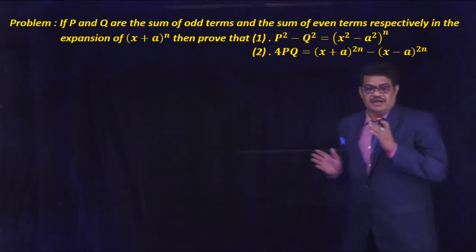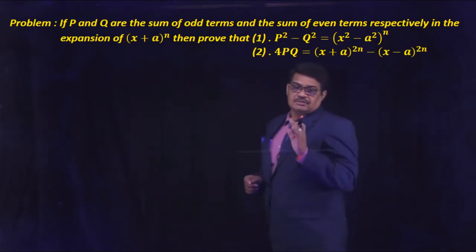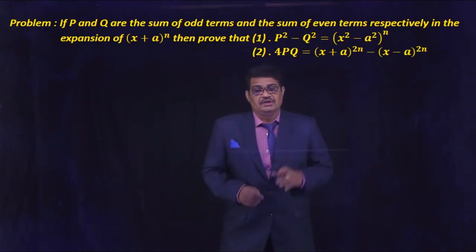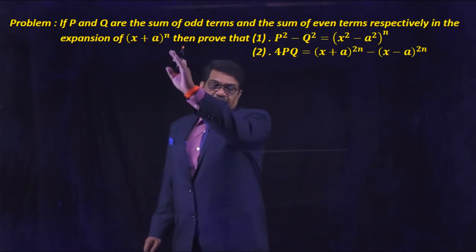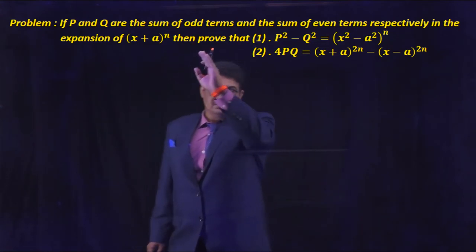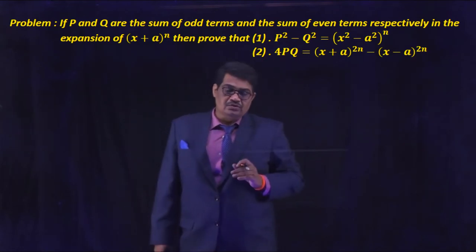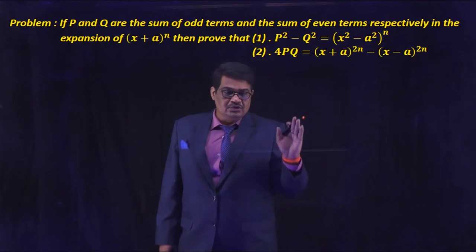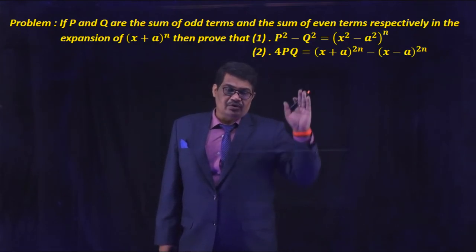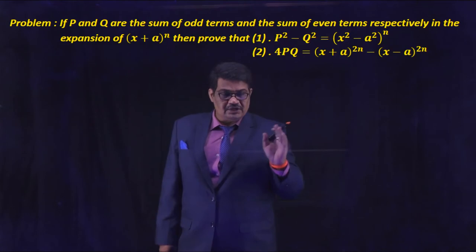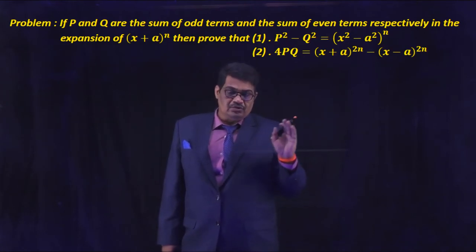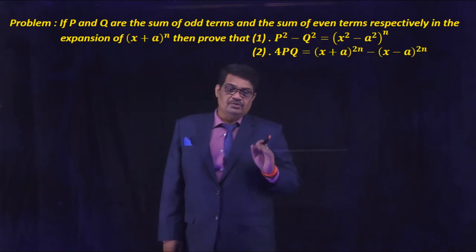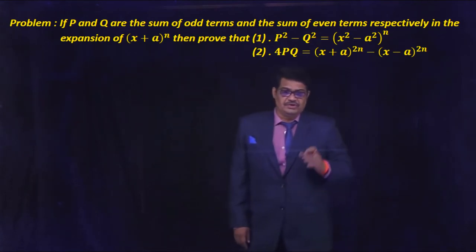If capital P and capital Q are the sum of the odd terms and even terms respectively in the expansion of (x + a) whole to the power of n, then prove these two results. First: P² - Q² = (x² - a²)^n. Second: 4PQ = (x + a)^(2n) - (x - a)^(2n). We have to prove these two results.